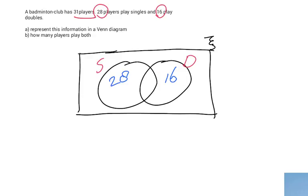28 and 16, so 28 plus 16—that's 44 players. So I have 44 players, but I only have 31 players in the entire club.